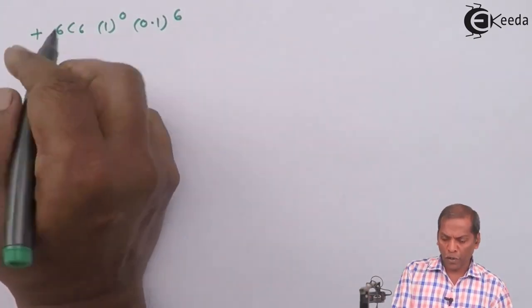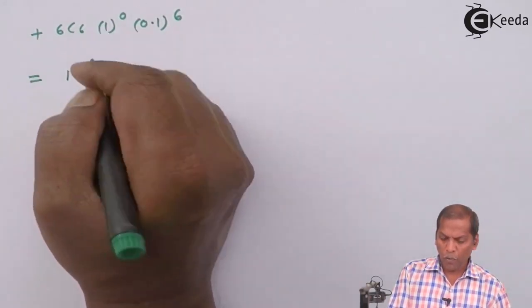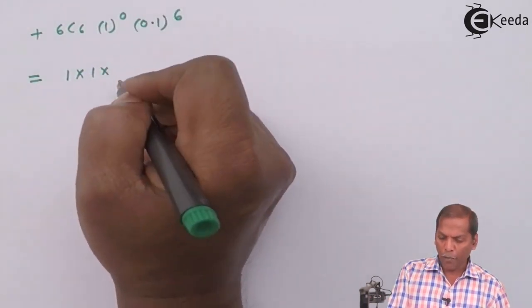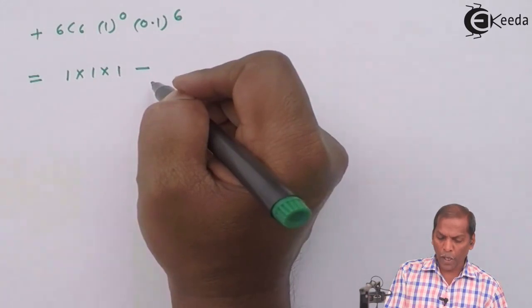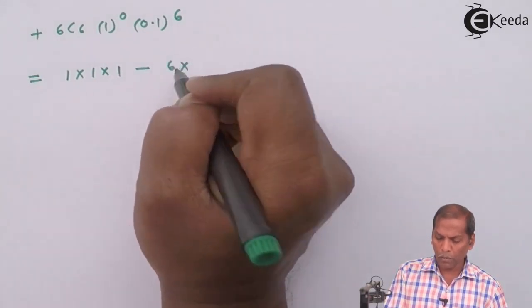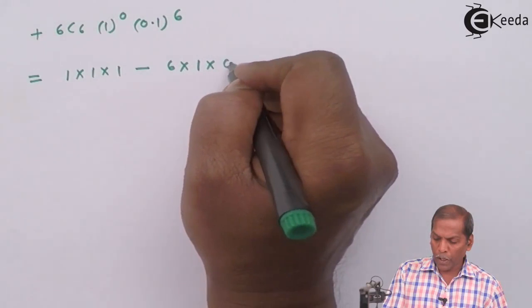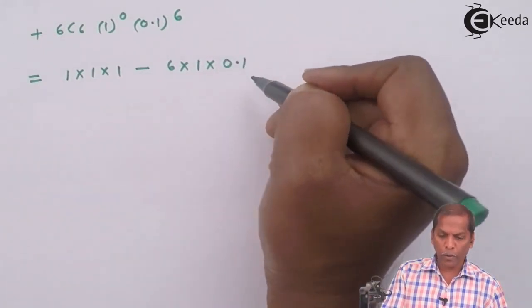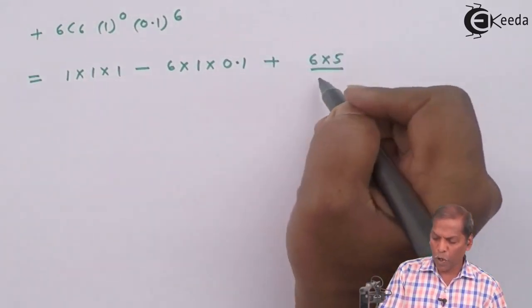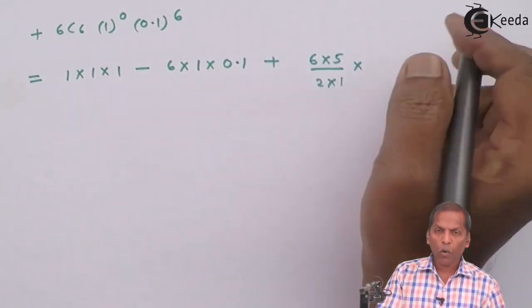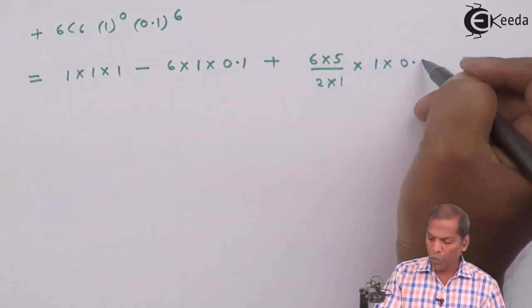Simplifying further: 6C0 gives 1, and 1^6 = 1, and (0.1)^0 = 1. Then minus 6C1 gives 6, into 1^5 = 1, into (0.1)^1 = 0.1. Plus 6C2, that is 6×5 / (2×1), into 1^4 = 1, into (0.1)^2 = 0.01.